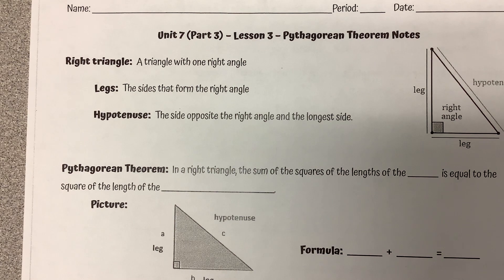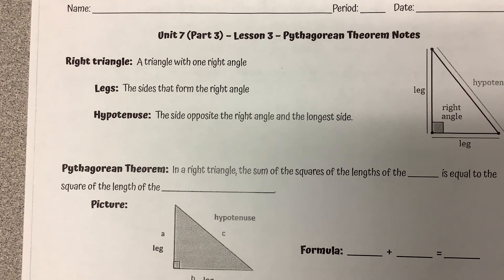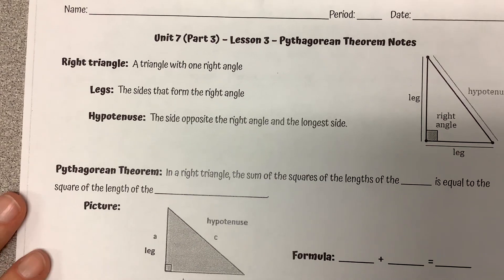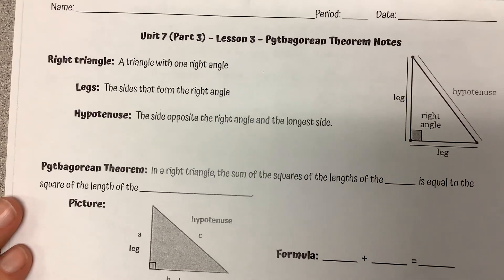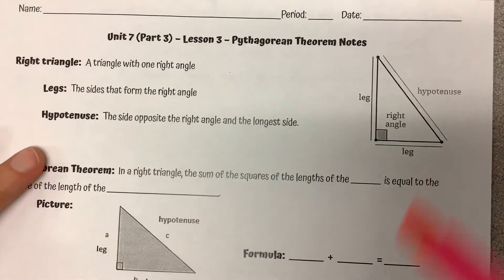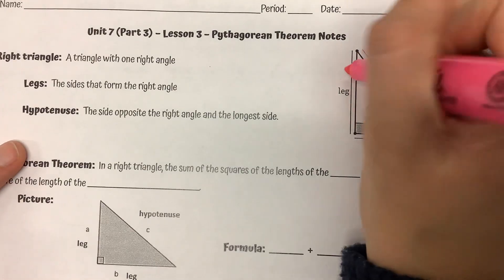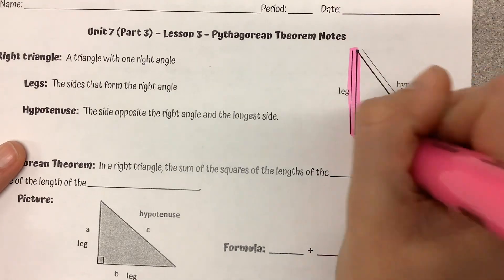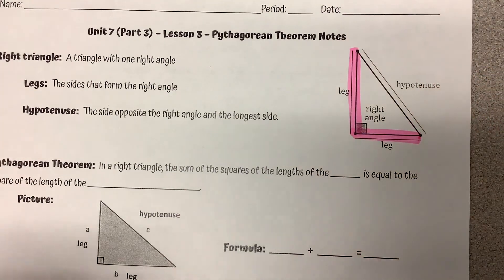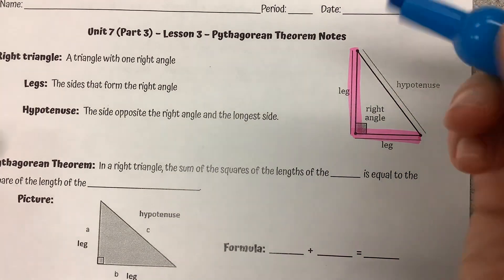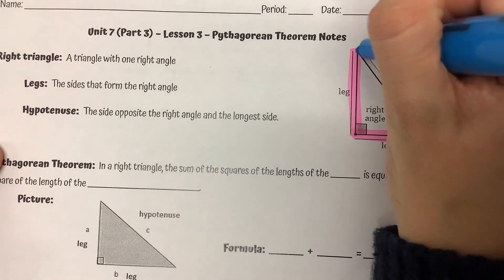Right triangles are triangles with one right angle. The legs of the triangle form the right angle, and the hypotenuse is the side opposite the right angle, and it is the longest side. So we have these two legs connected at the right angle and the hypotenuse.